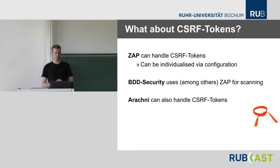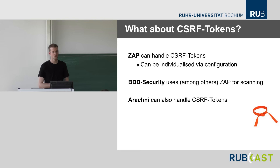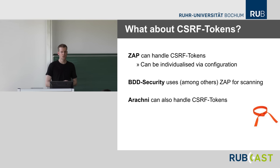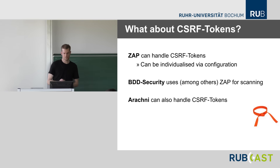What about CSRF tokens — cross-site request forgery tokens, the random protection tokens observed in most form posts for state-changing requests? ZAP and BDD Security, since it uses ZAP, can handle them very well, and so can Arachni. So it shouldn't be a problem to have a more secured application and still be able to scan it.